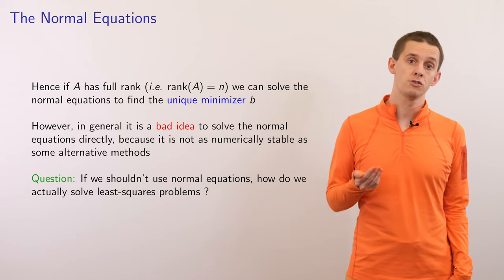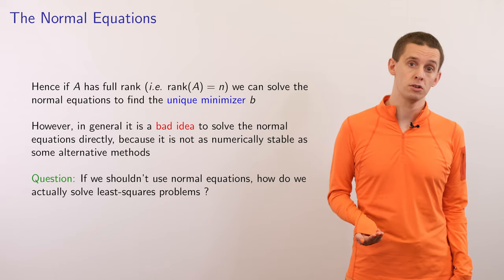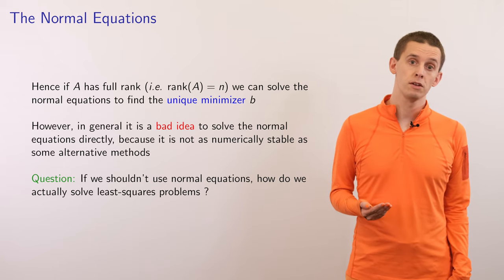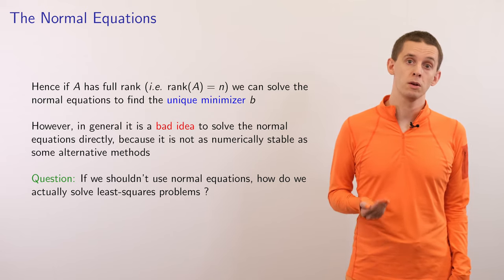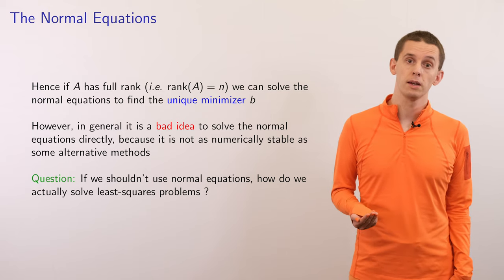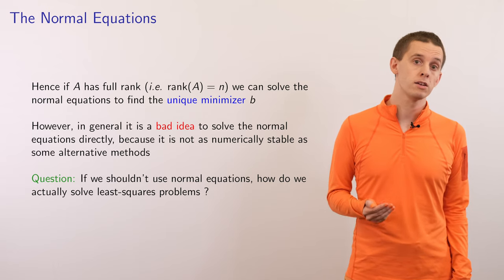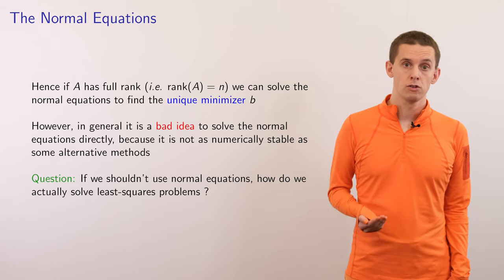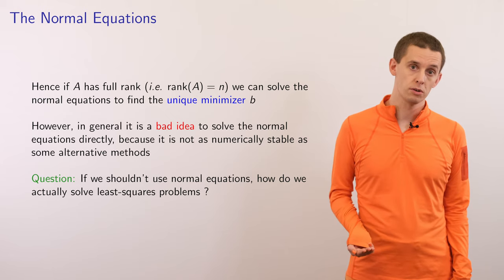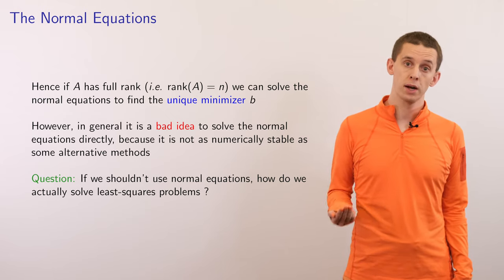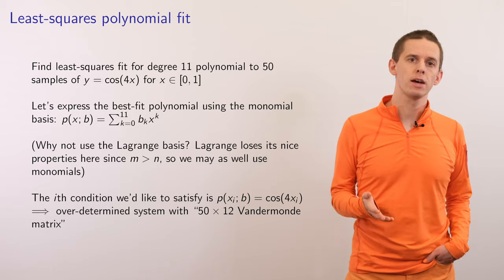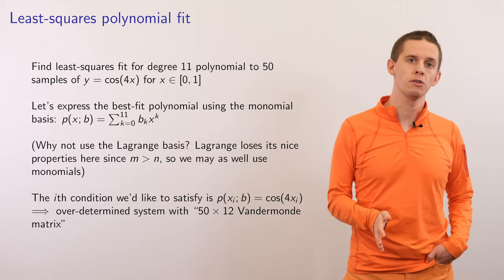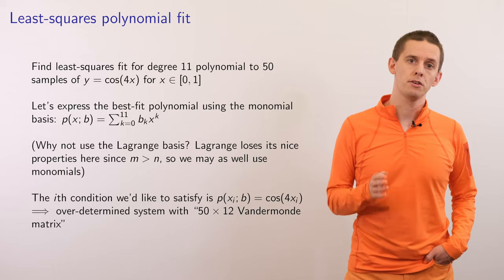However, it's in general a bad idea to solve the normal equations directly, because it's not as numerically stable as other approaches. Specifically, the matrix A^T A is typically poorly conditioned. So if we can't use the normal equations directly, how can we actually solve least squares problems in practice? It turns out we can solve linear least squares problems while avoiding the poor conditioning issues associated with solving the normal equations directly.